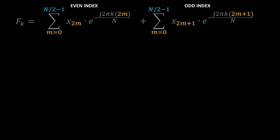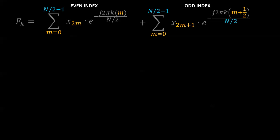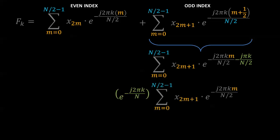Let's move the 2 in the numerator to the denominator for both the even and the odd index, and we can simplify the odd index term by distributing out a constant, which we can move to the front of the summation shown in green. And we can call this constant c sub k.